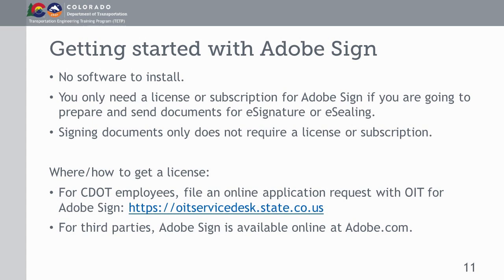CDOT employees can go to the help desk online or place a phone call or email to OIT to request access to Adobe Sign. For third parties external to CDOT, Adobe Sign is available online at adobe.com.